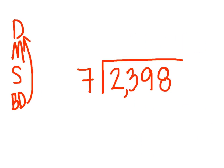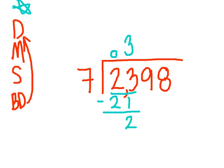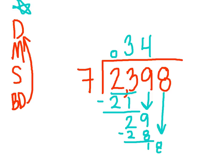Now we have 2,398 divided by 7. Remember to follow these steps as you are doing this problem. 7 goes into 2 zero times, so I'm going to look at 7 going into 23, and I know that 7 times 3 is 21. I subtract and I get 2. Bring down the 9. 7 goes into 29 four times — 4 times 7 is 28. Subtract and I get 1. Bring down the 8. 7 goes into 18 two times. 2 times 7 is 14. Subtract it, and you get your remainder, which is 4. I know that's the remainder because there's nothing left to bring down.